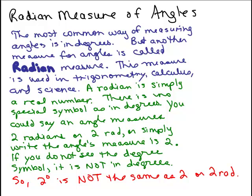A radian is simply a real number. It's not like 10 degrees. This angle measures five or this angle measures two-thirds. You could say an angle measures two radians or you can write two rad as an abbreviation. Or you could simply write that the angle's measure is two. You don't have to write the word radians. You've got an angle, but you're just saying it's a number. So if you don't see the degree symbol, the angle is not in degrees.